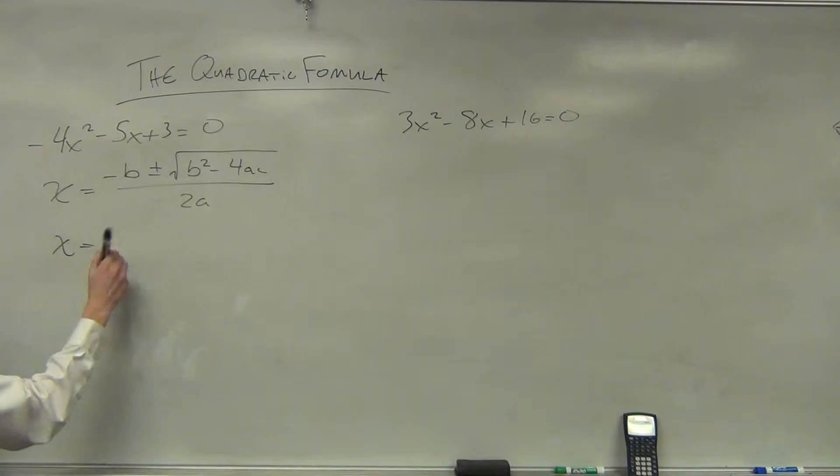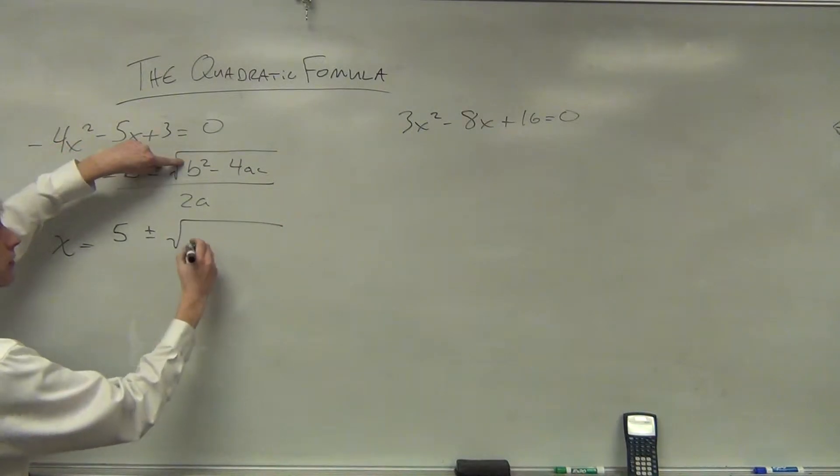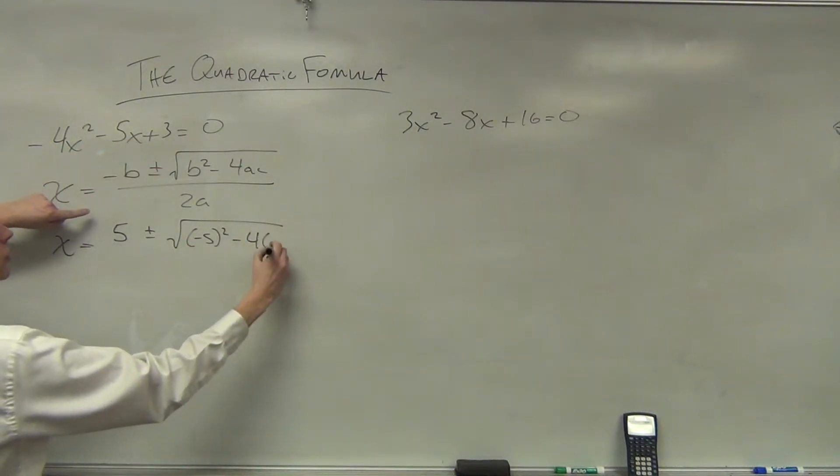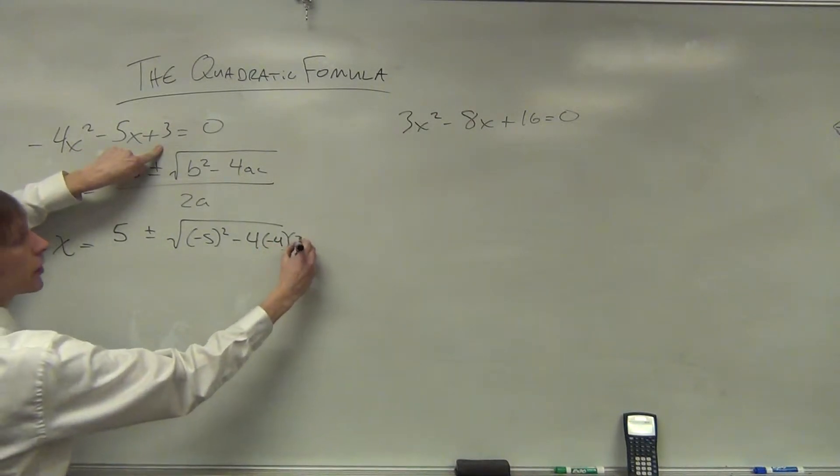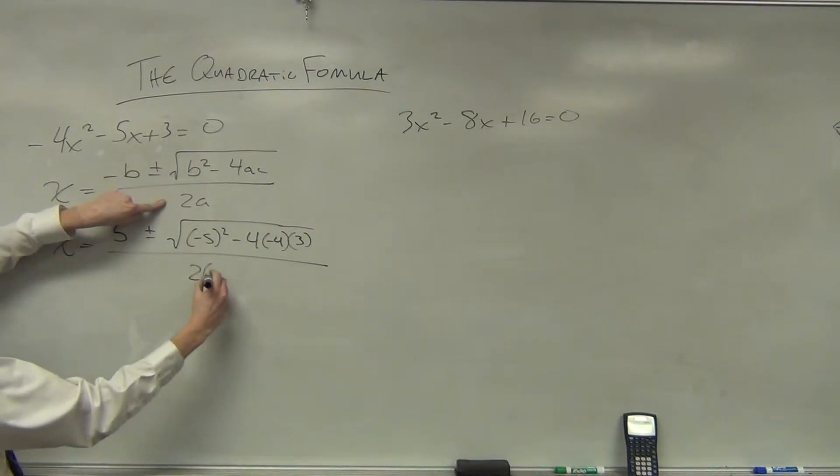So x is equal to the opposite of b, so positive 5 plus or minus the square root of b, negative 5 squared minus 4 times a, negative 4, times c, 3, all divided by 2 times a.